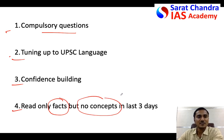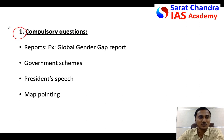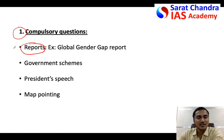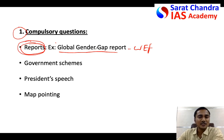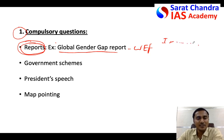Coming to the first category — compulsory questions. In the last five to six years, every year UPSC is asking questions on reports. For example, who publishes the Global Gender Gap Report — it's the World Economic Forum. Whatever reports have come in current affairs, read all of those reports and find their sources. Several institutes across India have released this year's important reports and indices for UPSC; go through them.